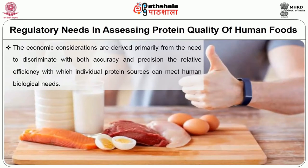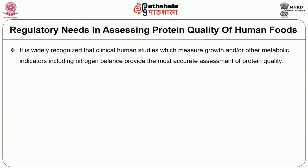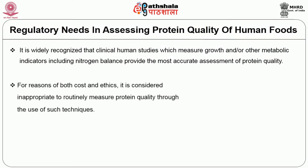Economic considerations are derived primarily from the need to discriminate with both accuracy and precision the relative efficiency with which individual protein sources can meet human biological needs. It is widely recognized that clinical human studies measuring growth or other metabolic indicators including nitrogen balance provide the most accurate assessment of protein quality. However, for reasons of both cost and ethics, it is considered inappropriate to routinely measure protein quality through such techniques.